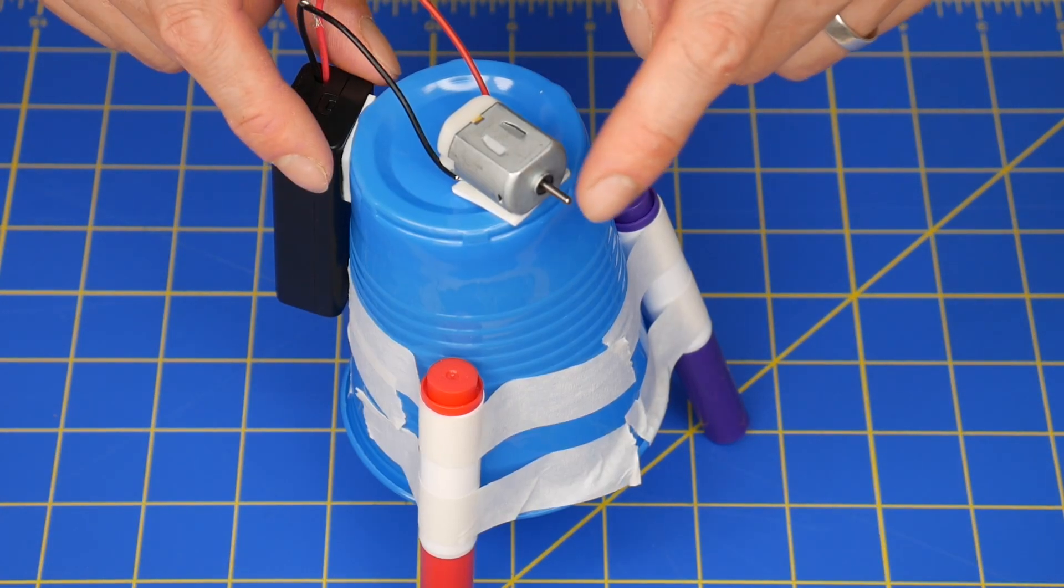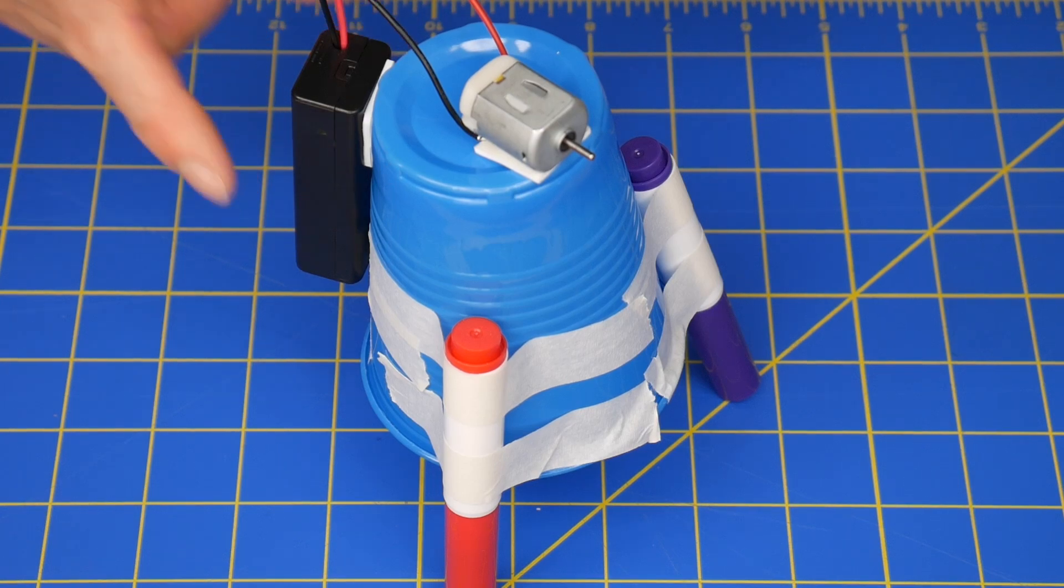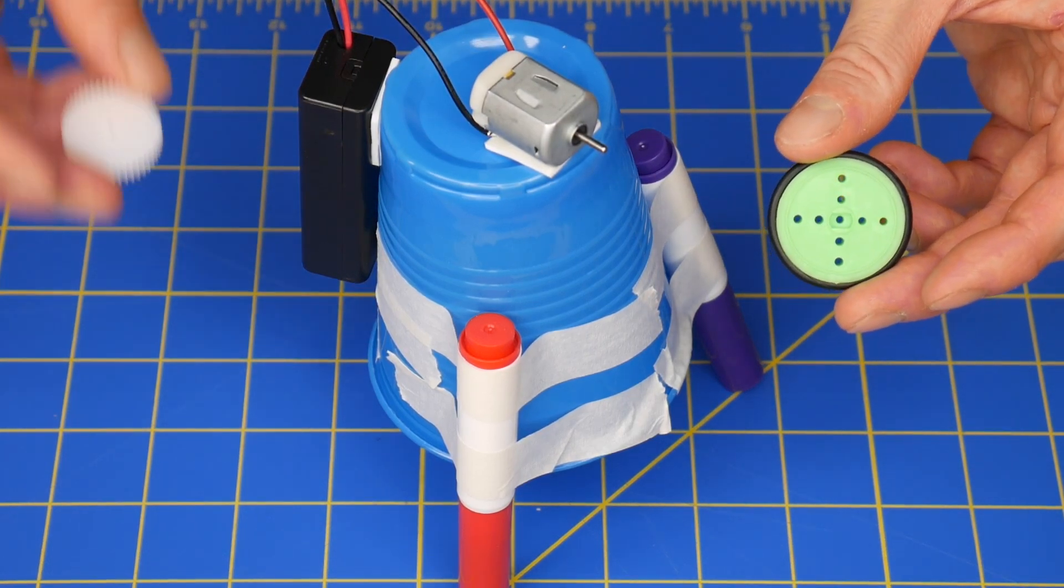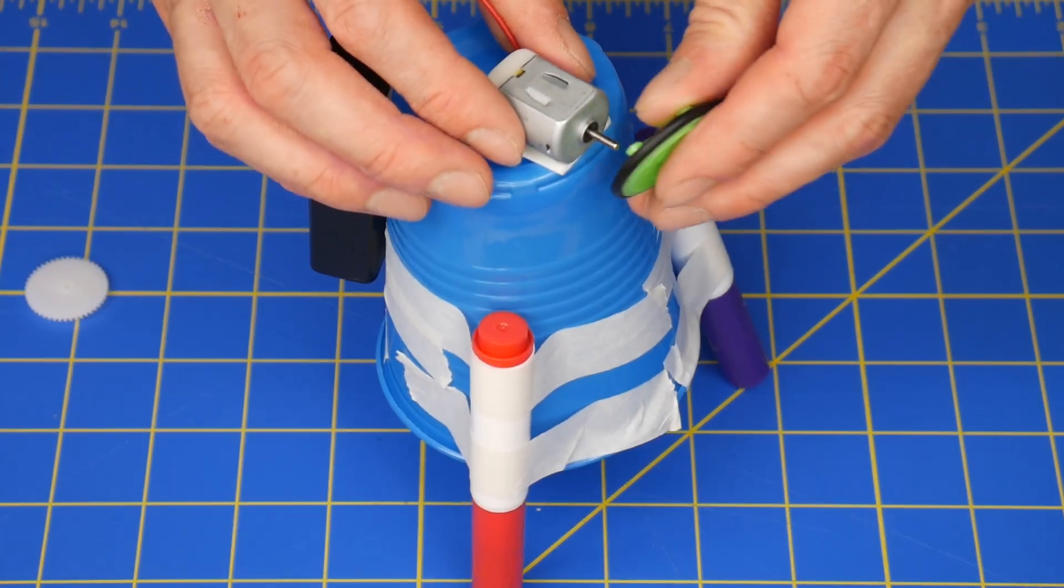Next you'll need to attach something to the motor shaft so that we can add an asymmetrical weight which is going to make the whole thing vibrate. You can use these little plastic wheels or plastic gear, anything that fits snugly onto these two millimeter motor shafts.